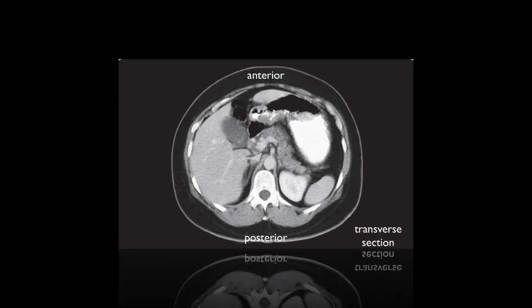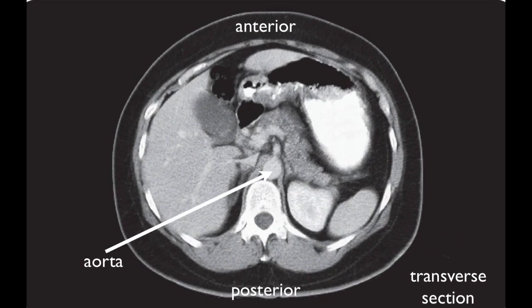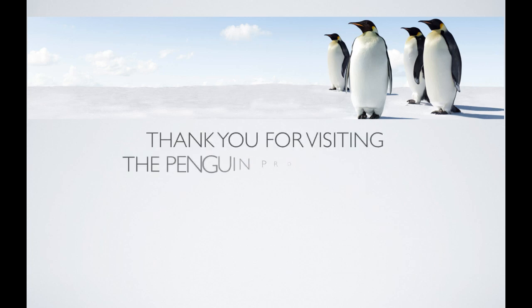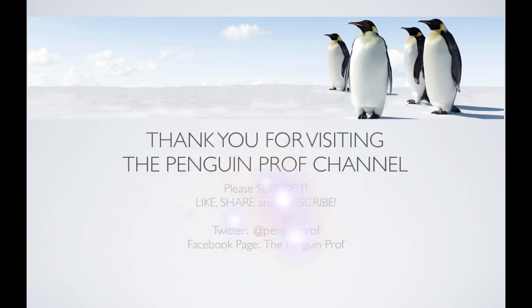That image I showed you in the beginning — now you can see the anterior and the posterior. What I had labeled there is the aorta, the biggest artery of the body where blood leaves the heart for systemic circulation. As always, I hope that this was helpful. Thank you so much for visiting the Penguin Prof Channel. Please click like, share, and subscribe. You can visit on Facebook and follow on Twitter. Good luck.